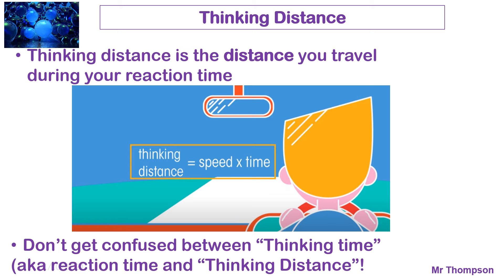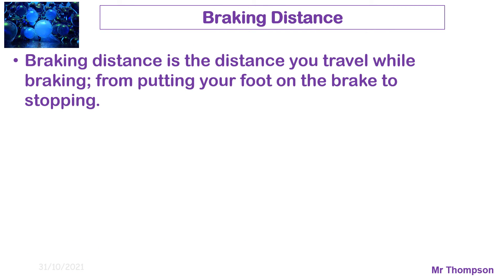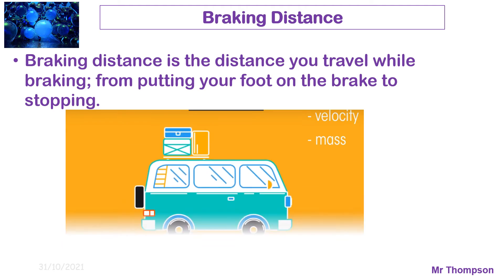The thinking distance is your speed multiplied by your reaction time. So if you've got a slow reaction time, you will have a larger thinking distance. If you're traveling at a faster speed, the thinking time won't be affected, but it will take you longer to travel before you actually put your foot on the brake. The braking distance is the distance you travel while you are braking — from putting your foot on the brake to coming to a stop.